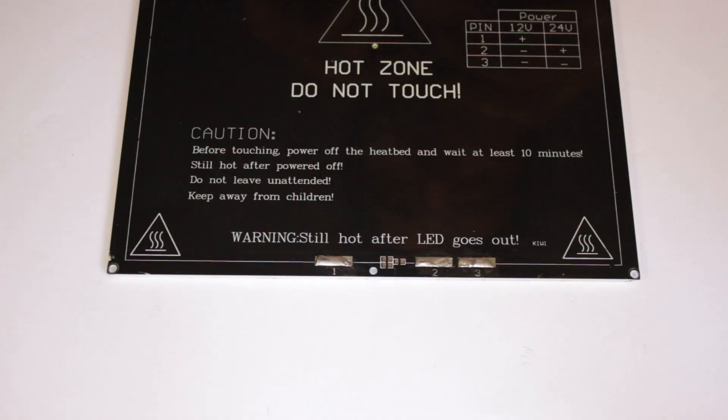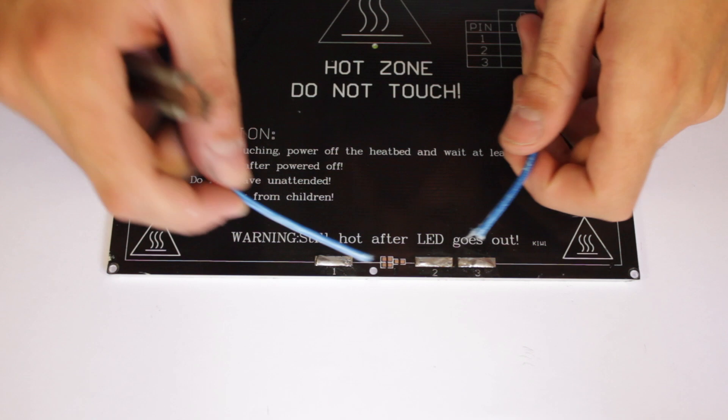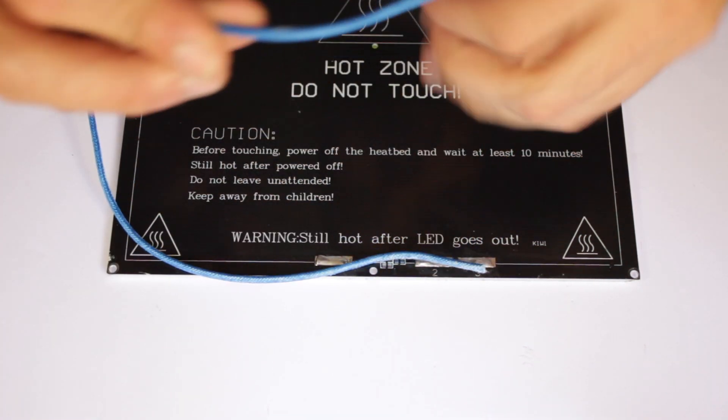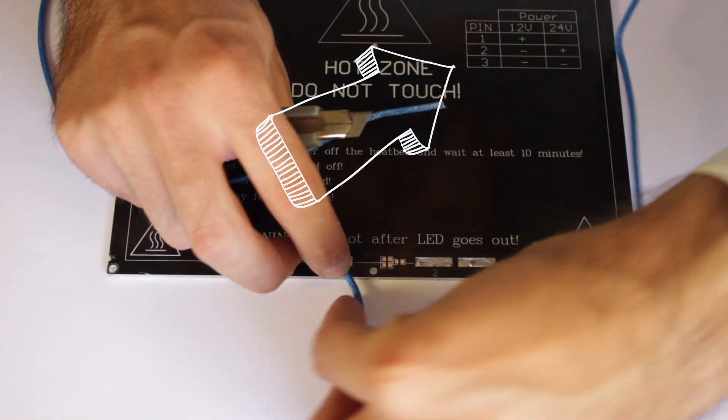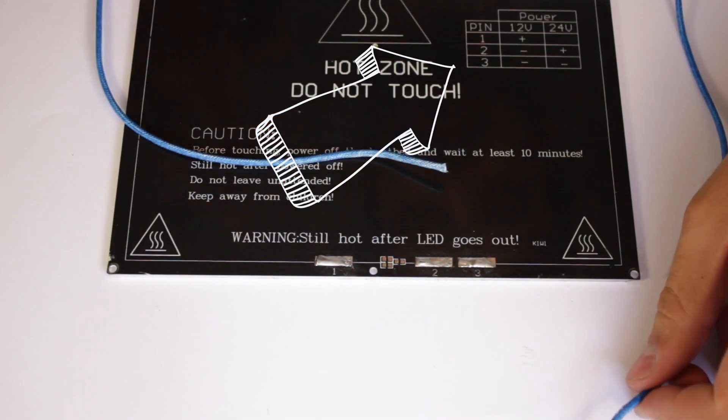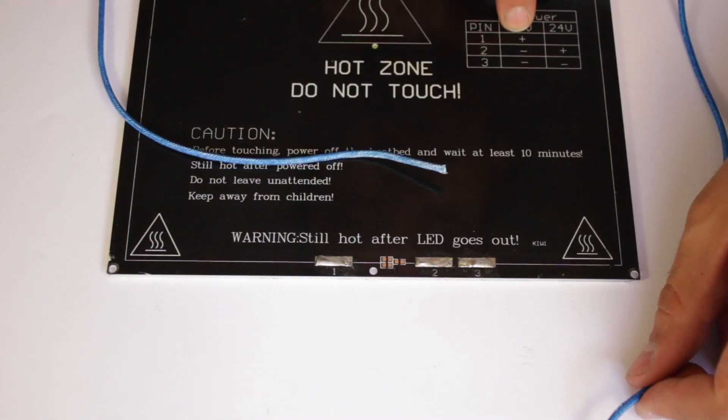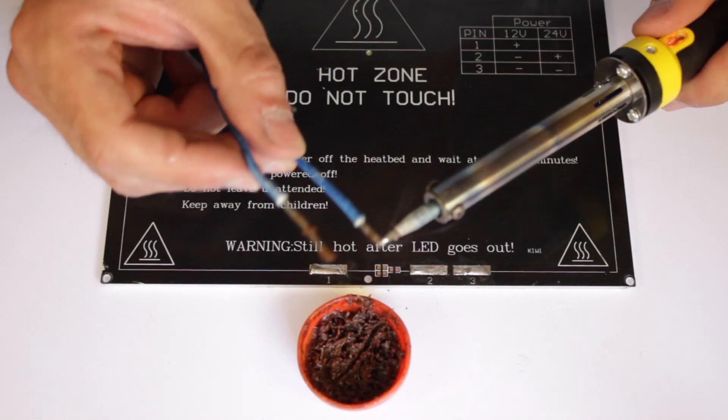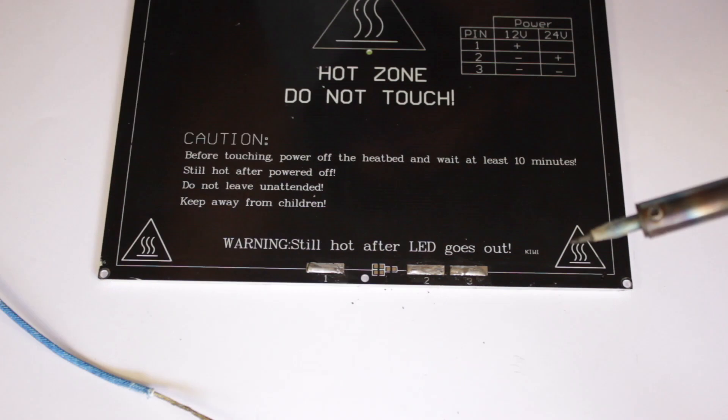We're going to weld the two cables that will power the heated bed, one here and the second here. Since we'll be using a 12V power supply, we'll connect them following the scheme you have here. So we'll weld one cable to the pad number 1, and the second cable to the pads 2 and 3. So using quite a lot of tin, we'll go for it and weld everything in its position like so.